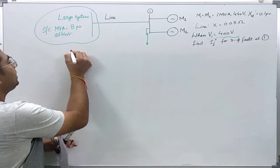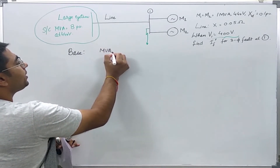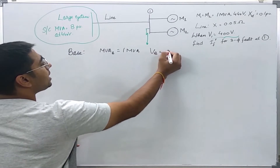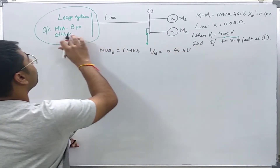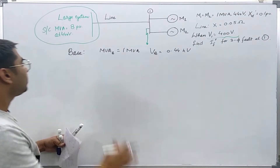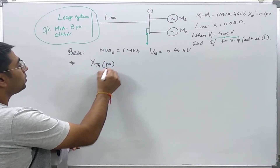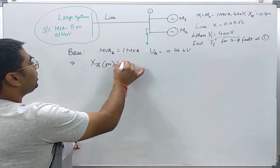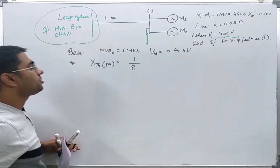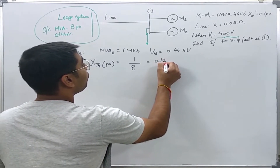We assume base values: MVA base is 1 MVA and voltage base is 0.44 kV (440 V). With the same base voltage as given for the power system, the Thevenin reactance in per unit is simply 1 over 8, which comes out to be 0.125 per unit.